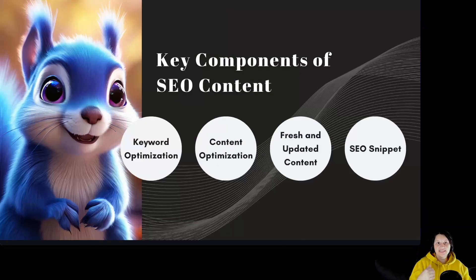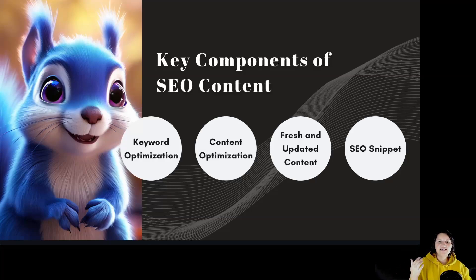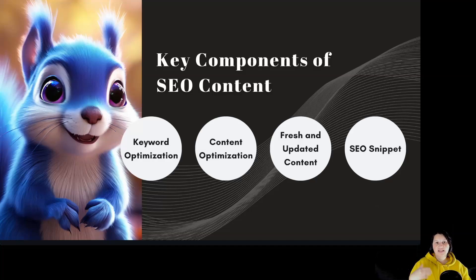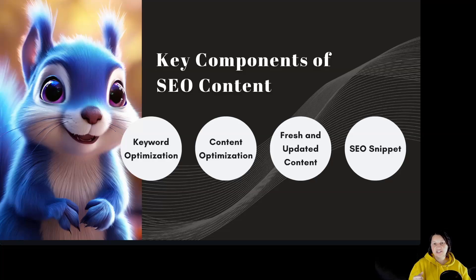Key components of SEO content include keyword optimization — researching and selecting relevant keywords for each focus page and integrating them naturally into content while maintaining readability. Content optimization uses the quality SEO Live Assistant to ensure content meets SEO best practices. Fresh and updated content means regularly updating content to reflect current trends, as Google favors fresh content. The SEO snippet should also be reviewed and optimized for each focus page to improve click-through rates and search engine rankings.